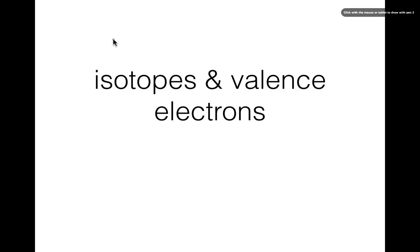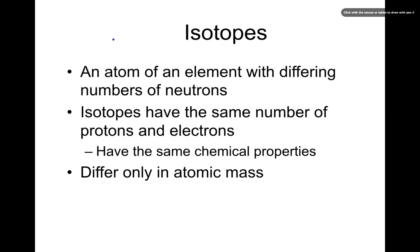In this video we're talking about isotopes and valence electrons. Starting out with an isotope, you guys kind of got an idea of what an isotope is already. It's an atom of an element with a differing number of neutrons. The only thing you're changing is the number of neutrons.